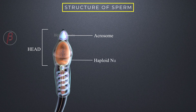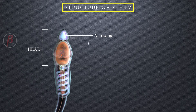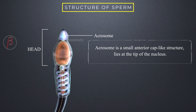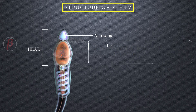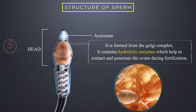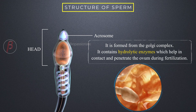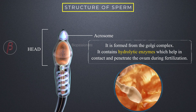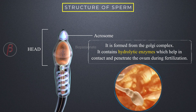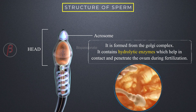The acrosome is a small anterior cap-like structure that lies at the tip of the nucleus. The acrosome is formed from the Golgi complex, which is the chemical factory of our cell. It contains hydrolytic enzymes which help to contact and penetrate the ovum during fertilization by dissolving the plasma membrane.